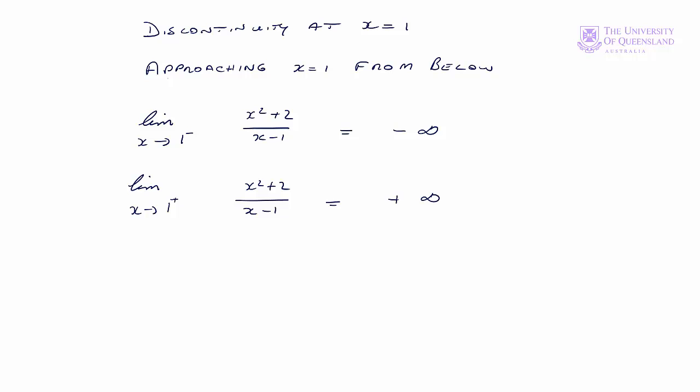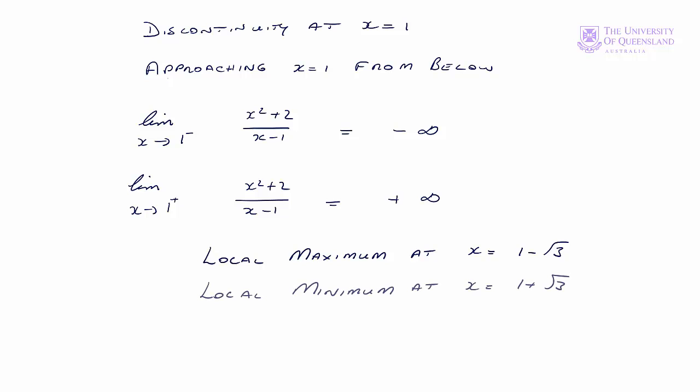So we see that our function is unbounded at the endpoints and unbounded at the points of discontinuity — so there is no global maximum or global minimum. In that case we don't need to evaluate our function further. We can say that we have a local maximum at x equals 1 minus the square root of 3, and a local minimum at x equals 1 plus the square root of 3, and no global maximum or minimum. And that completes our example.